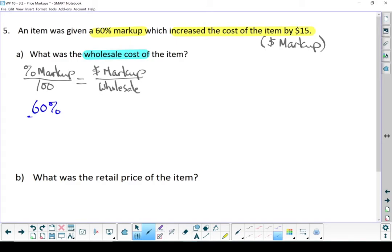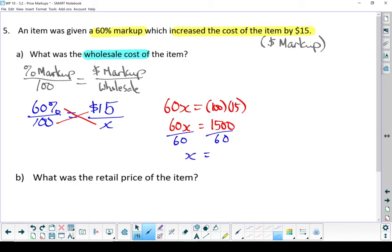Put in what we know. Put in X for the wholesale cost, because we don't know what that is. And let's cross-multiply. 60 times X equals 100 times 15. Divide both sides by 60. 1500 divided by 60 is 25, and that's going to be $25. And keep in mind that $25 is the wholesale cost. That's the original price that the store paid for the item.